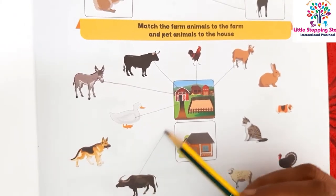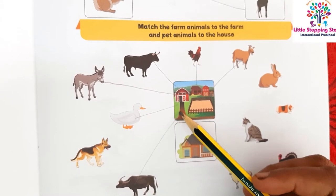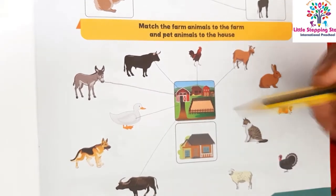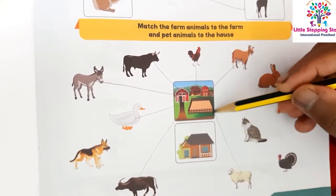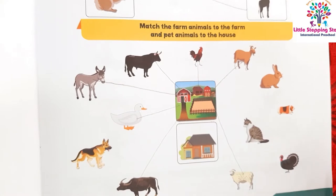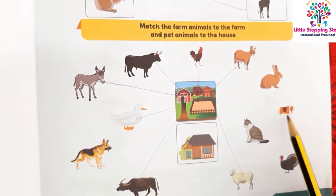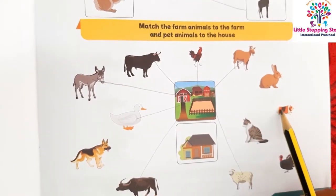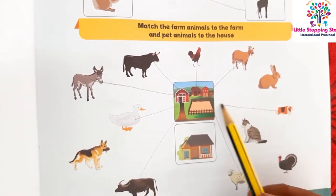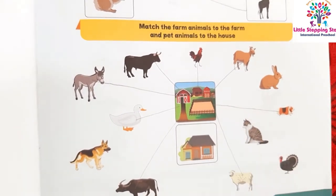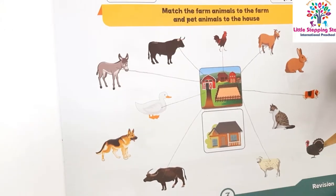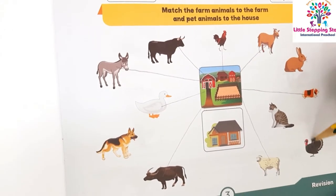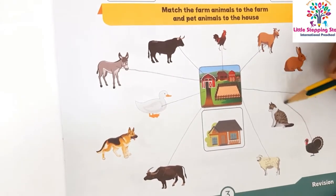Then sheep — match to the farm. Then pig — match to the farm. Match the coop to the farm.